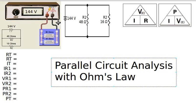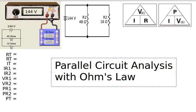If we consider individual electrons, they come from the negative terminal and have a choice: they may either flow through R1 and back to the positive terminal, or flow through R2 and back to the positive terminal. So there are two different paths for the electricity to flow.